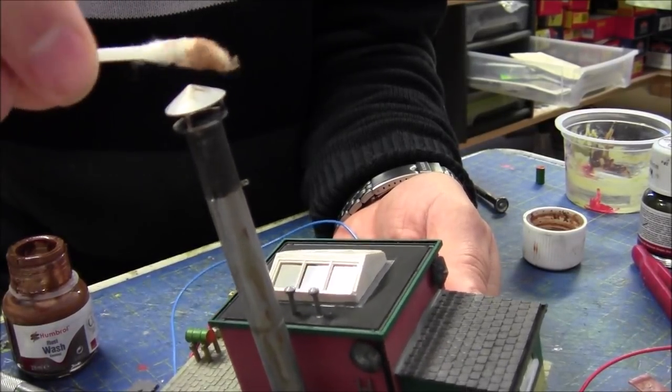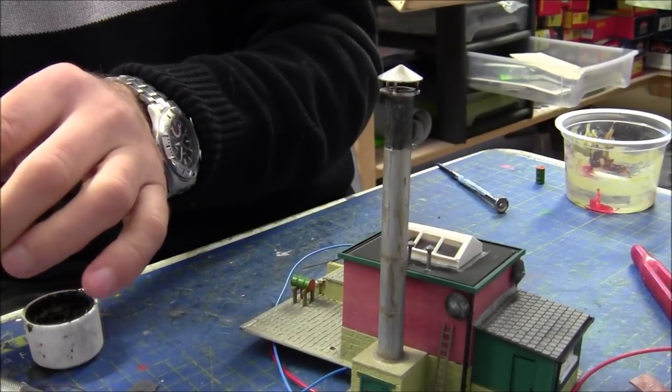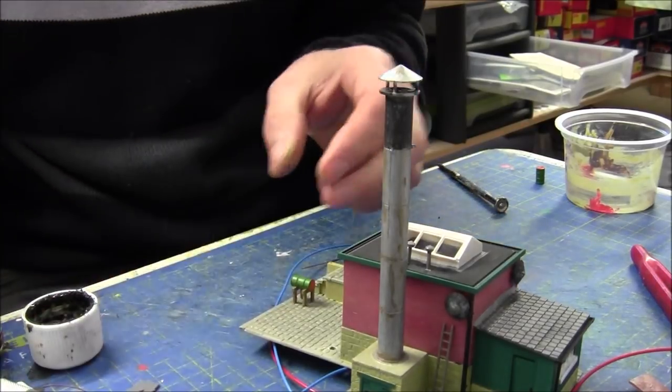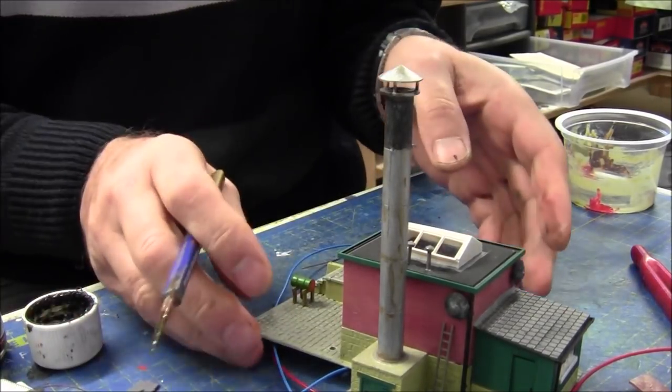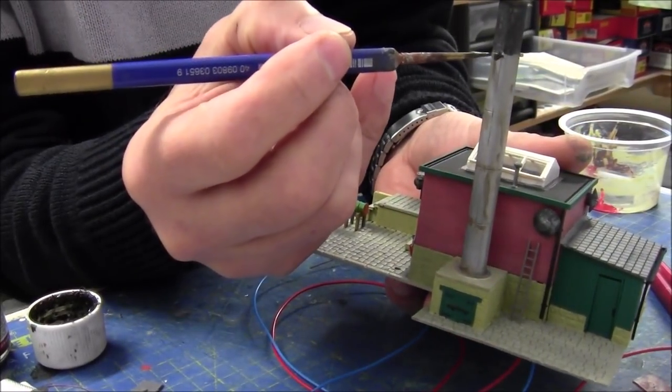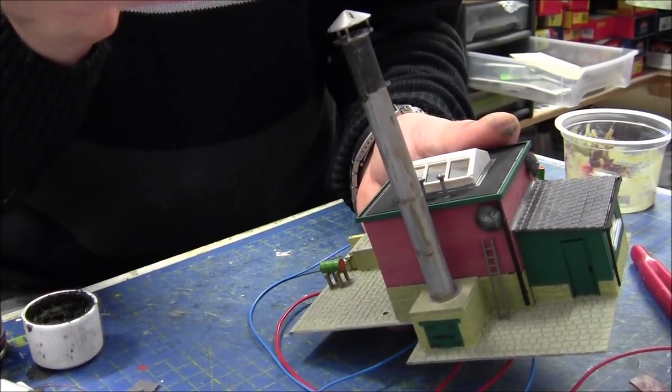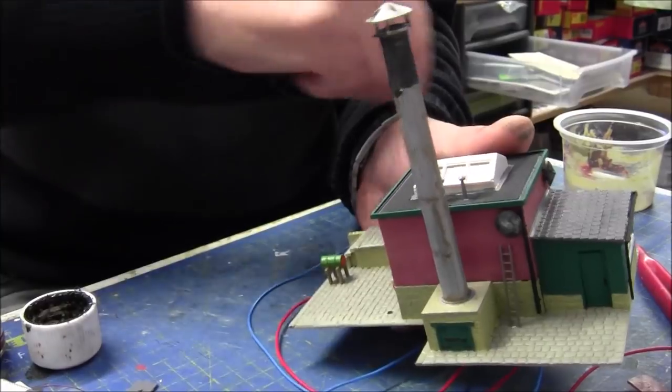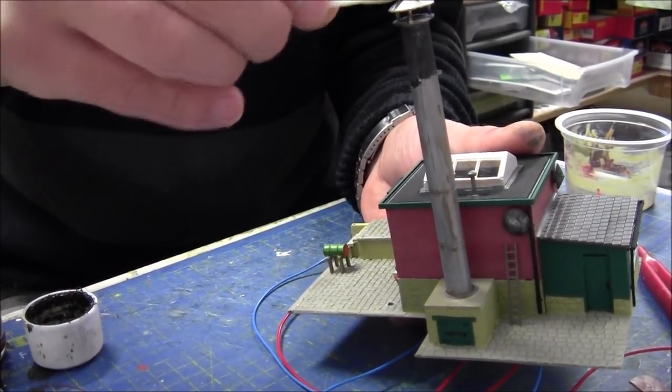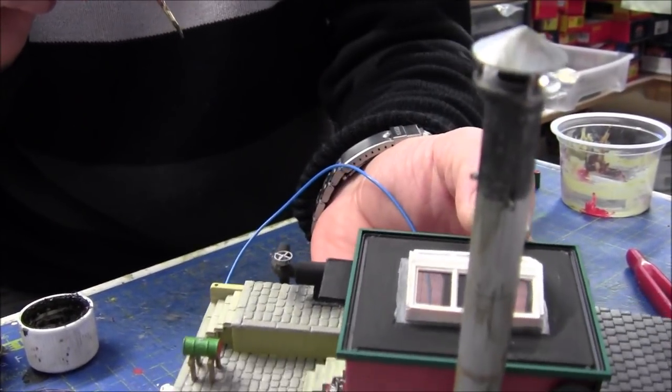Wipe it off again. Next one is the dark green. Put a little bit around the top, tiny bits on the top there. Just get your cotton bud and wipe it off. That's the chimney done - don't need a lot.